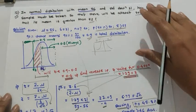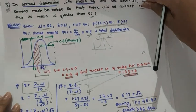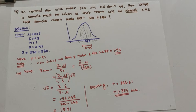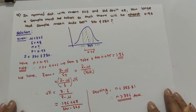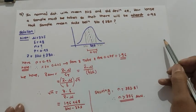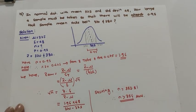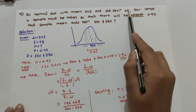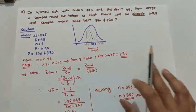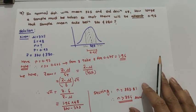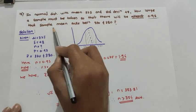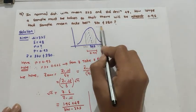This was the 12th example. Now moving to the 13th example: in a normal distribution with mean 375 and standard deviation 48, how large a sample must be taken so that there will be at least 0.95 probability that the sample mean falls between 370 and 380?